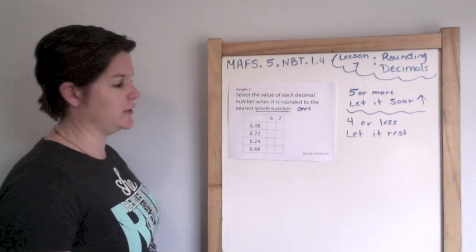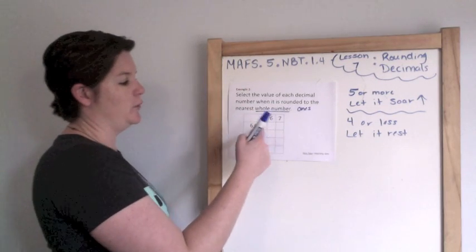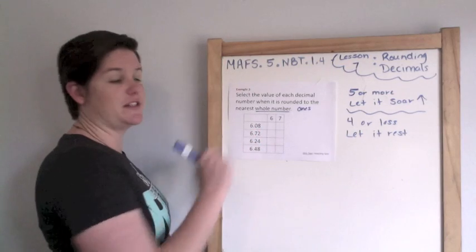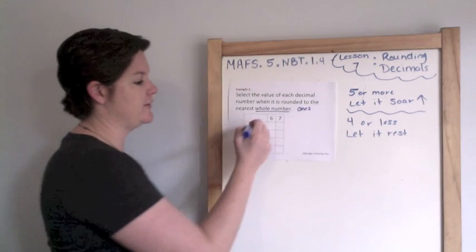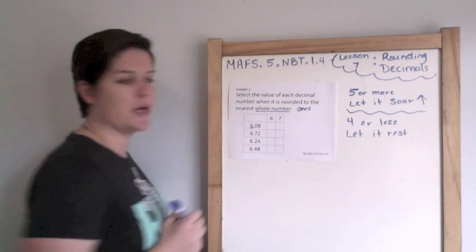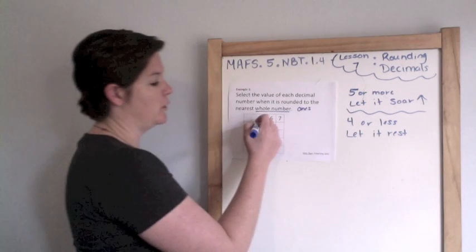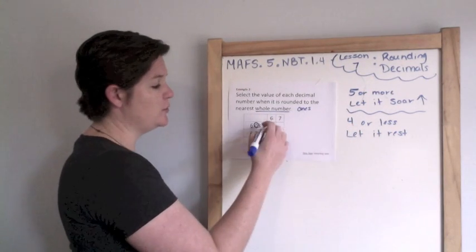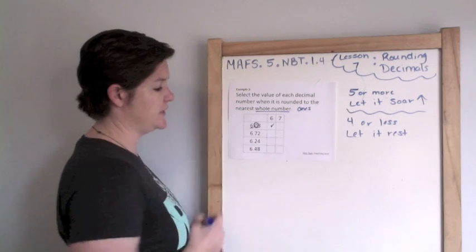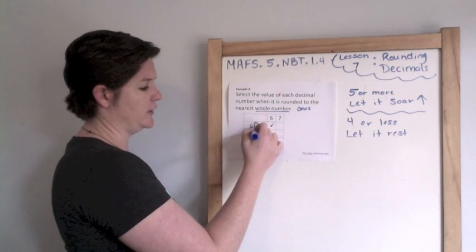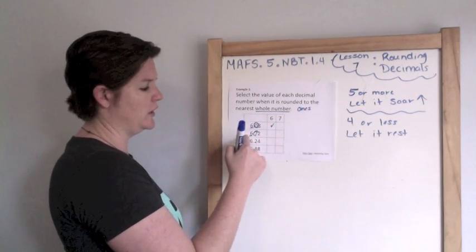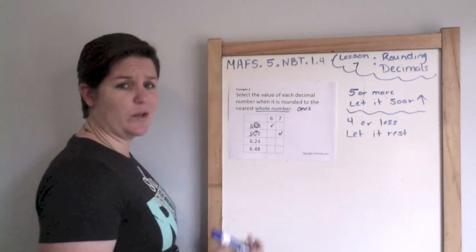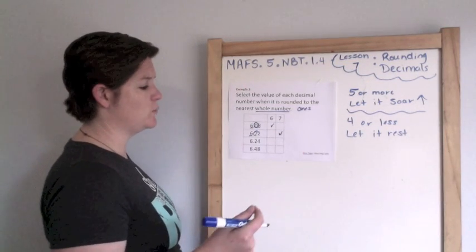This is a matching item question. So we've got to decide, does this number, if we round it to the nearest whole, does it round to six or seven? So let's find the whole, which is six. Look next door, we have zero. That's four or less, you better let it rest so it stays six. Here's the whole, look next door. Five or more, let it soar, and add one to the rounding place. Six plus one is seven.